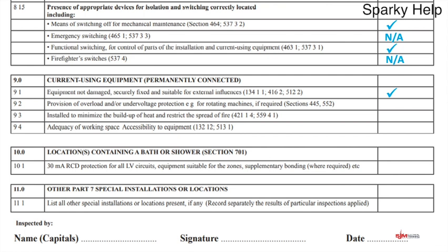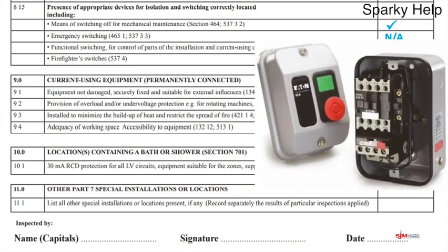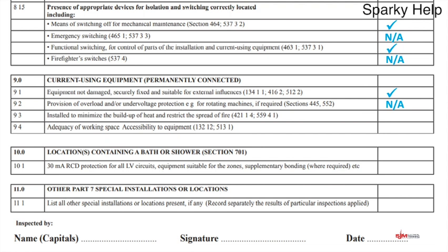Provision of overload and/or under-voltage protection for rotating machines. If you've installed a rotating machine or motor, have you put in an appropriate starter with overload protection? Under-voltage protection is built into these devices. If you've got it, it'll be a tick; if you haven't got any rotating machines, it'll be an NA.